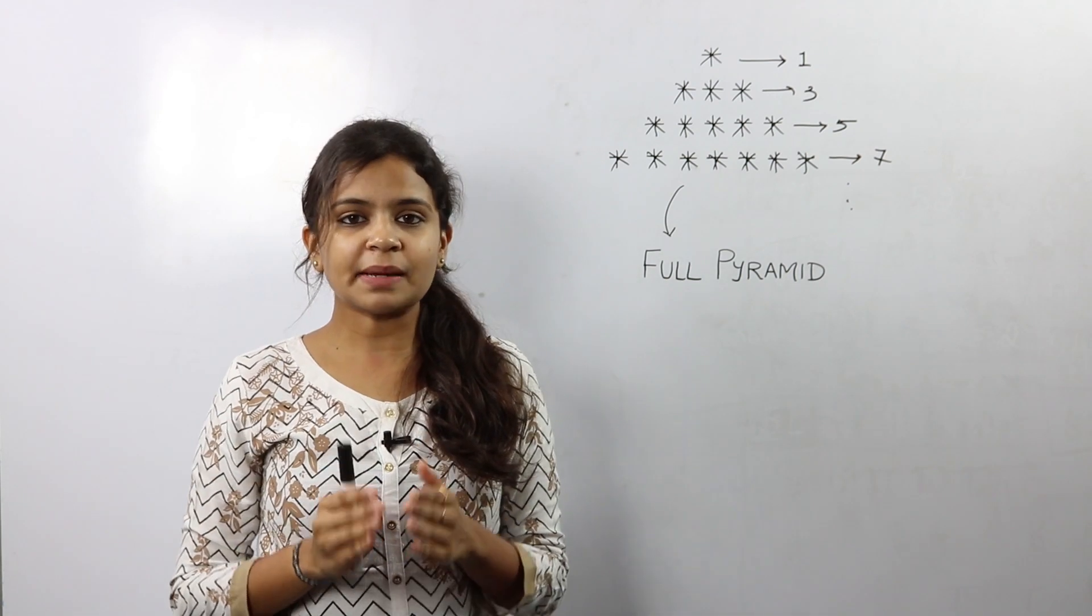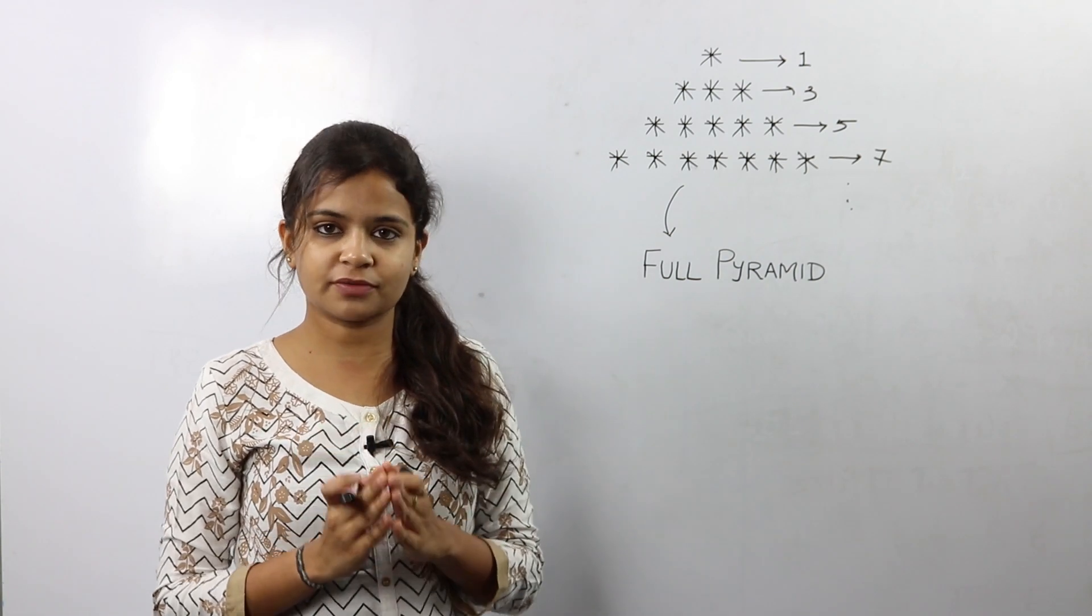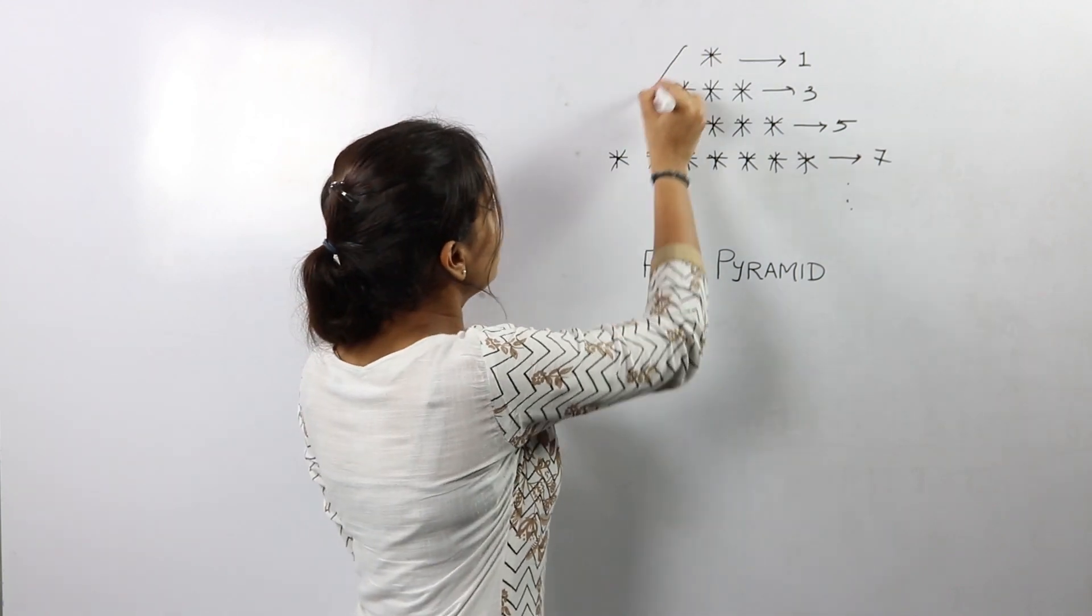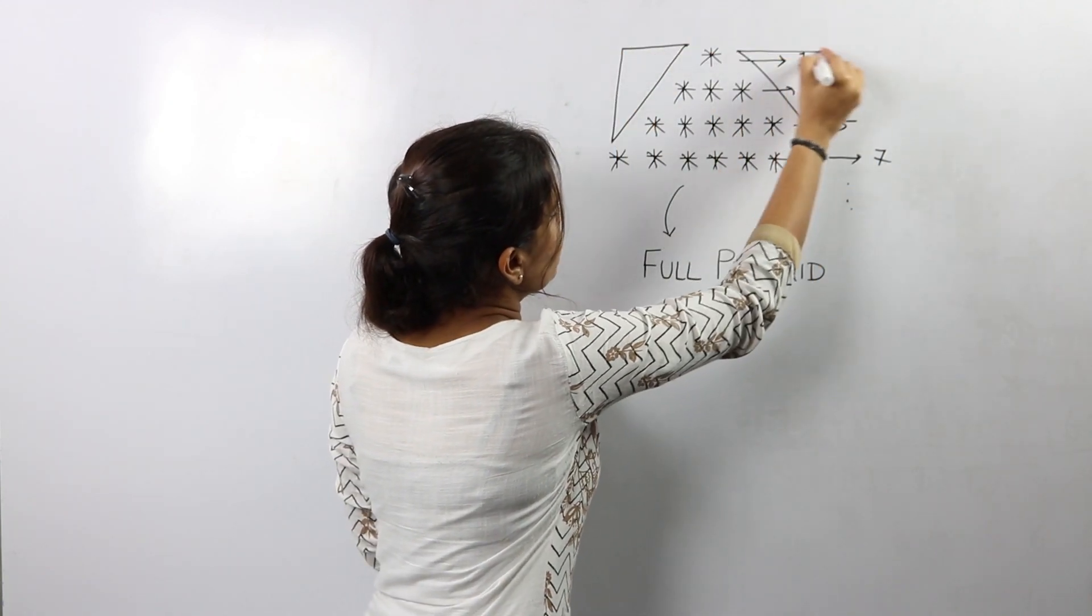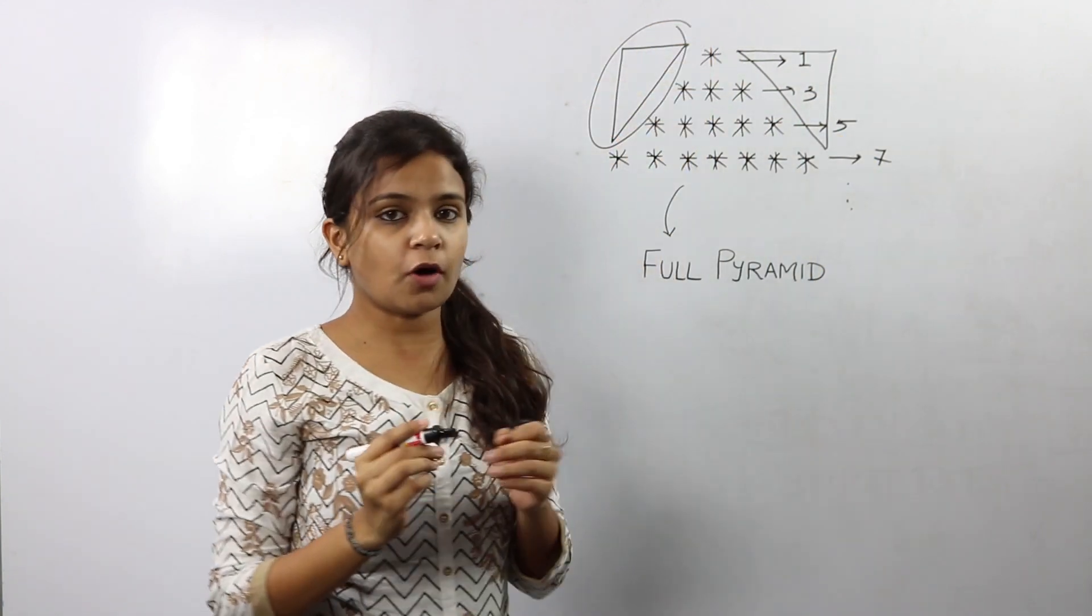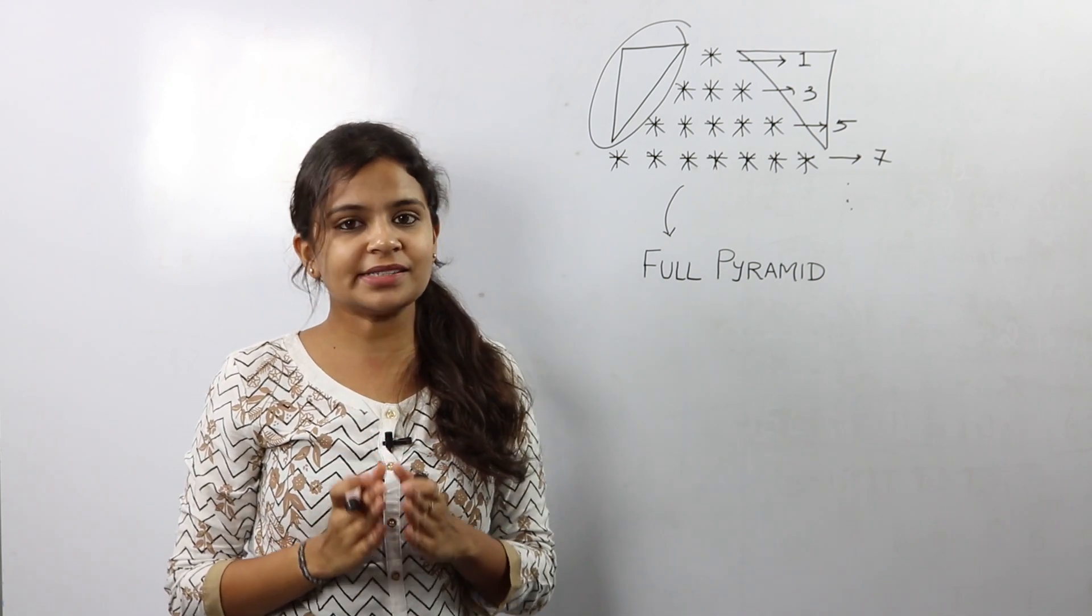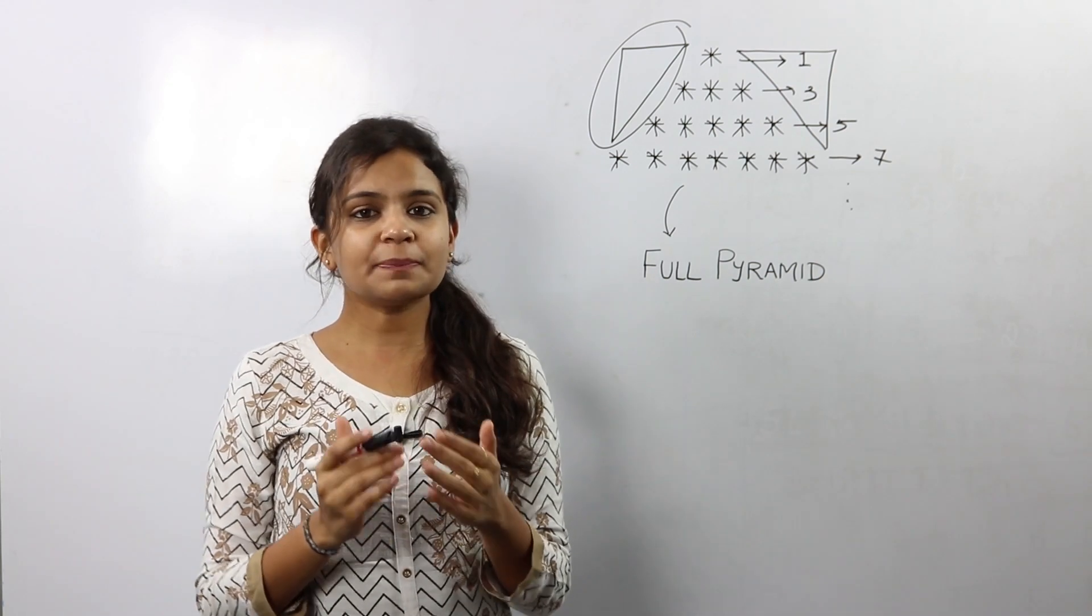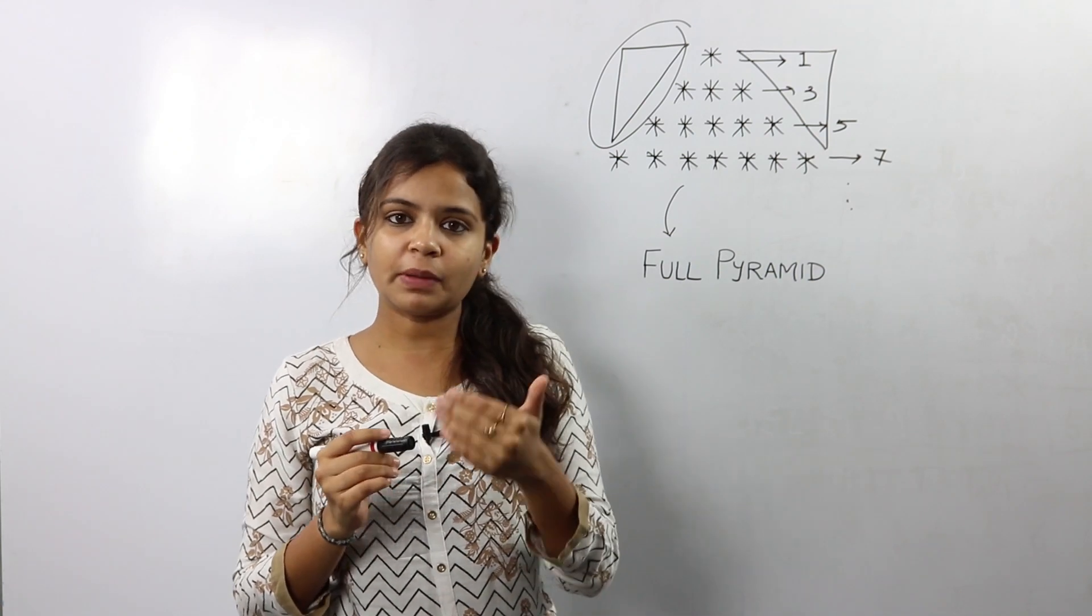Well, the next observation we can make is every row has spaces on either sides of the stars. For example, the spaces before the stars are called as leading spaces and the spaces after the stars are called as trailing spaces. So this brings us to the conclusion that we need to print spaces even before we print stars.